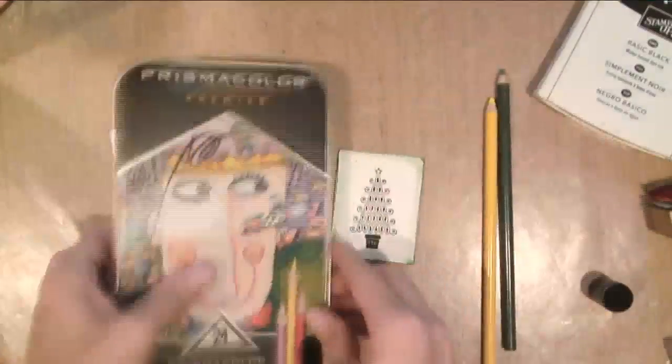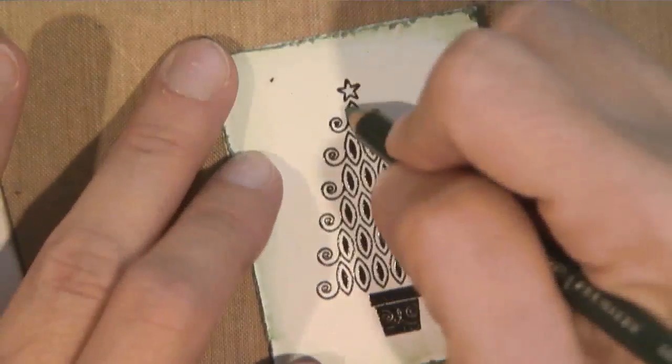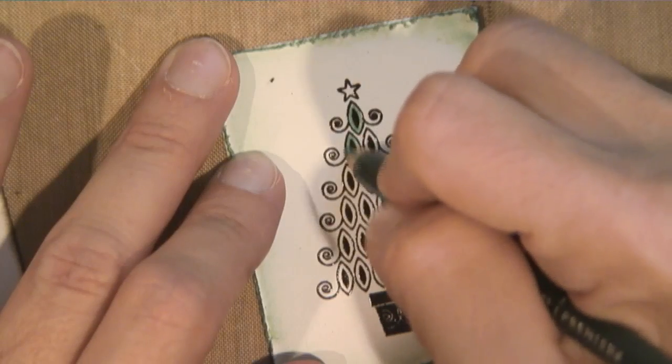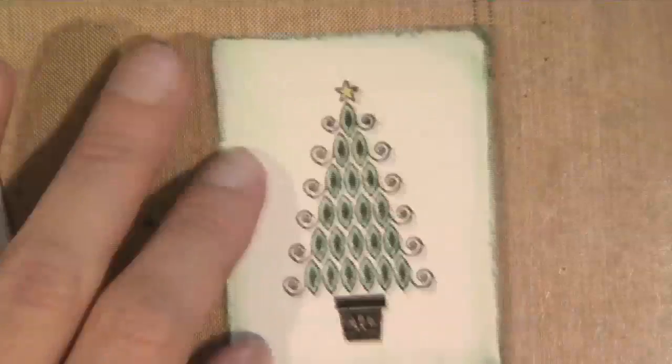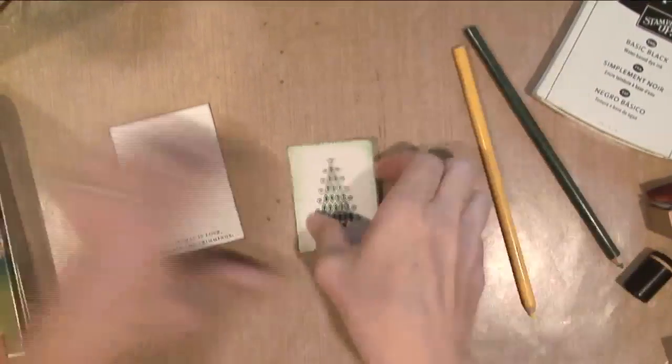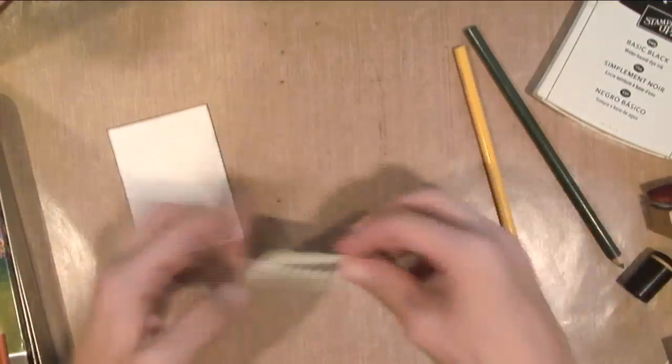This is Prismacolor colored pencils. I just got a random green and yellow. I'm going to color inside each of those green, and then I'm going to color the star yellow. Go ahead and adhere that piece.